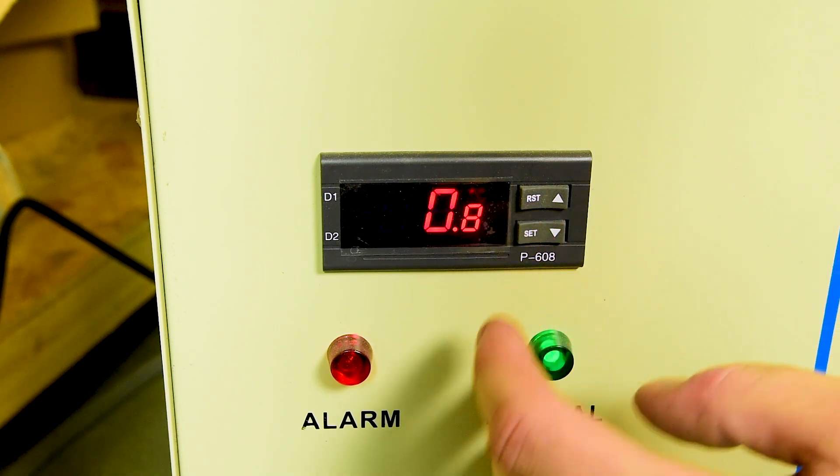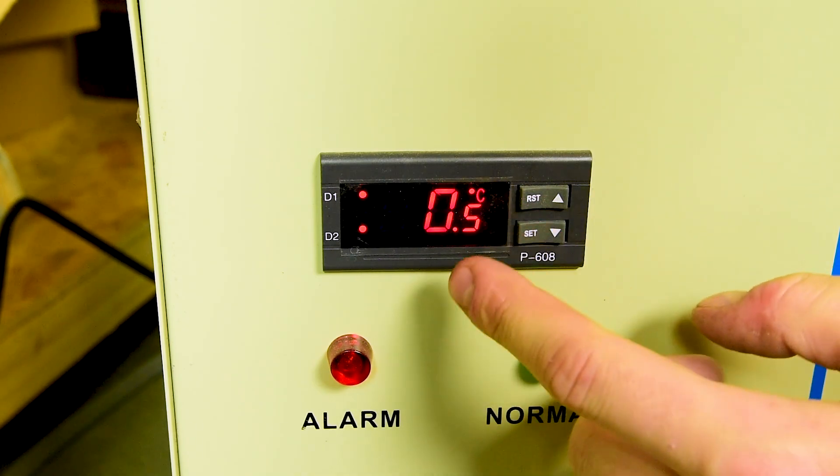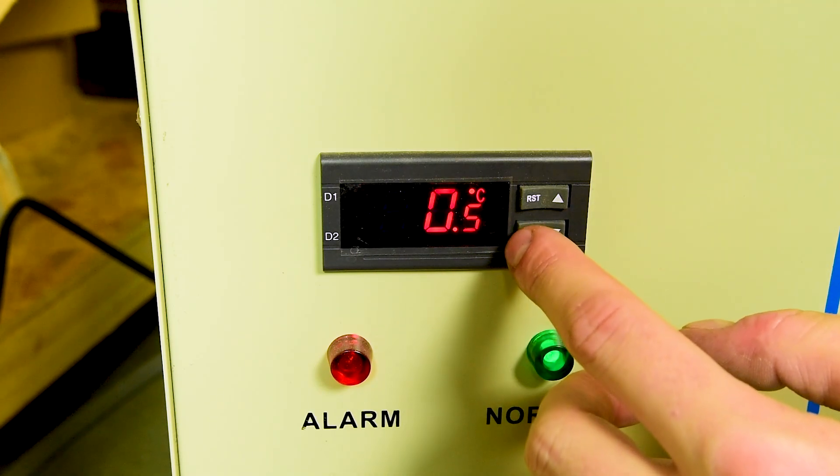F2 is how much temperature difference we're allowing so I'm going to say to hold within half degrees plus or minus half a degree of 15 degrees is where I want this to keep the water temperature.